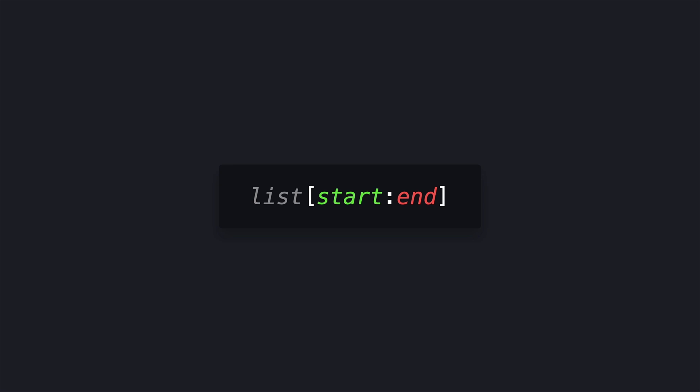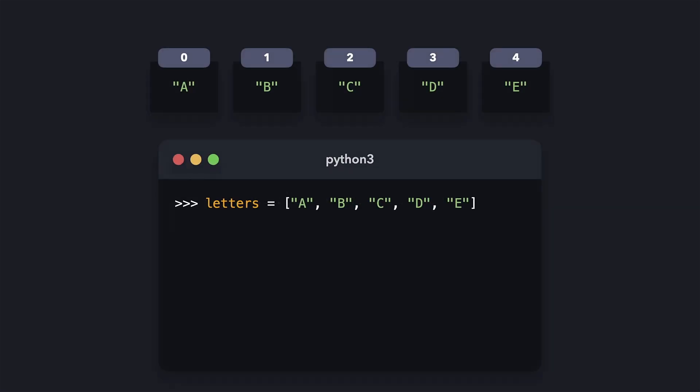We can slice a list by using square brackets and specifying an optional start and end index. The element on the start index is the first element that should be included in the new list, and the element on the end index won't be included in the sliced list — it'll be sliced exactly before that element. Let's say that we want to create a new list that only contains the first two elements of the letters list, so letters a and b. We can slice the letters list from index 0 to index 2. When we print the first_2 variable, we see that a new list has been created containing only the first two items.